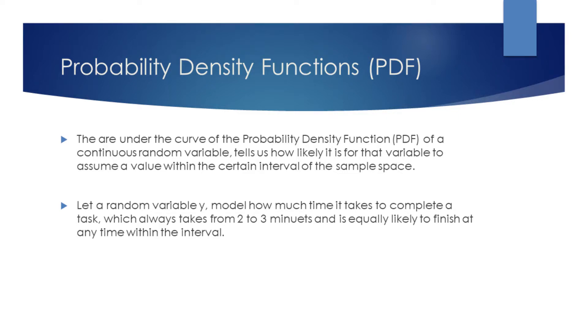The area under the curve of the probability density function, or PDF, of a continuous random variable tells us how likely it is for that variable to take on a value within a certain interval of the sample space.